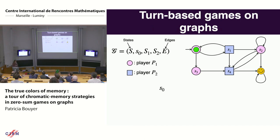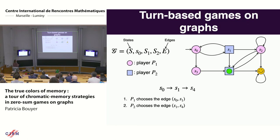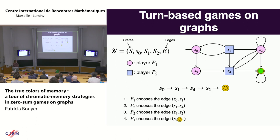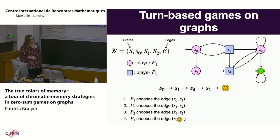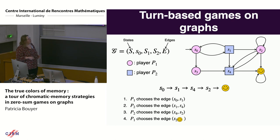Player 1 chooses to go to the next vertex S1. Then it's player 2's turn, since the vertex belongs to player 2, and they can decide to go down to S4. Player 2 can again decide the next edge and go to S2. Then player 1, since S2 belongs to player 1, can decide to go down. This is how we play a game—similar to chess, though here you can play twice in a row if the graph allows it.